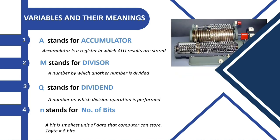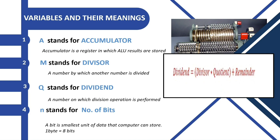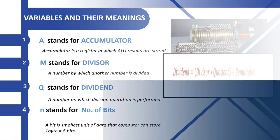This is the image of accumulator. And this is the formula for dividend: Dividend equals divisor times quotient plus remainder.